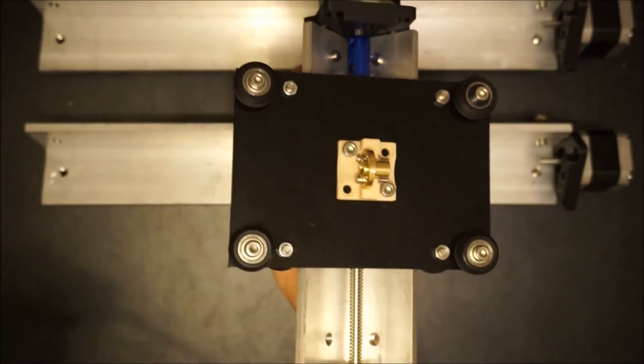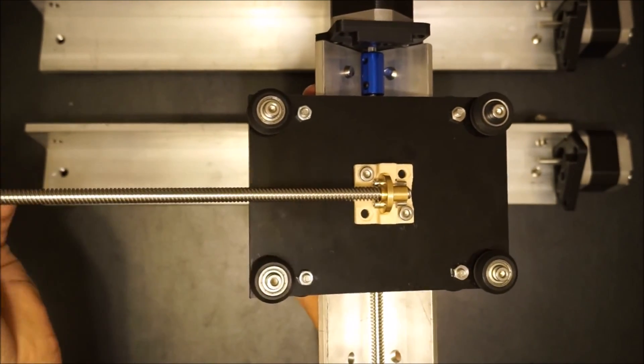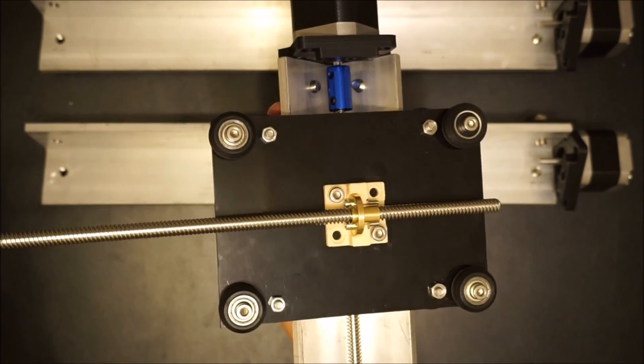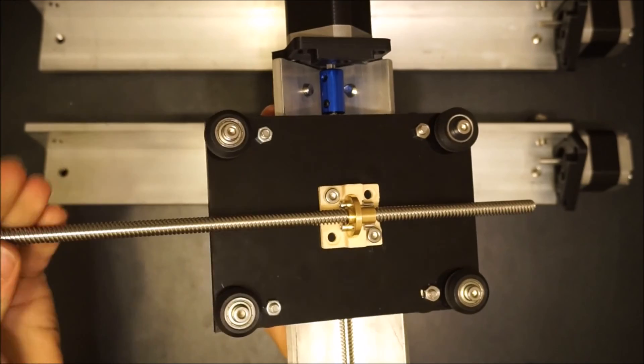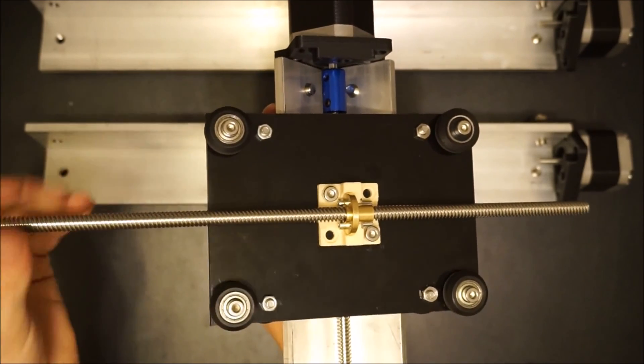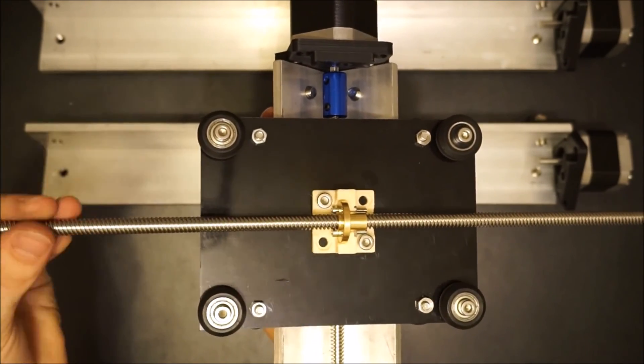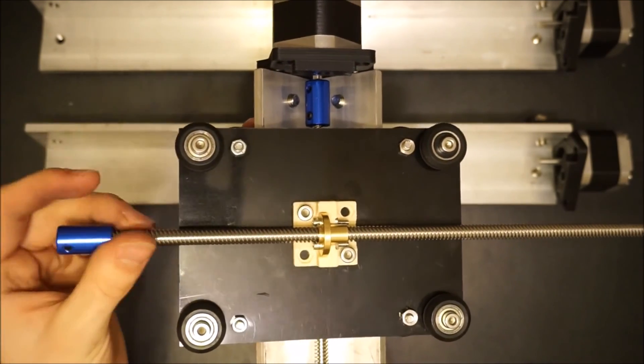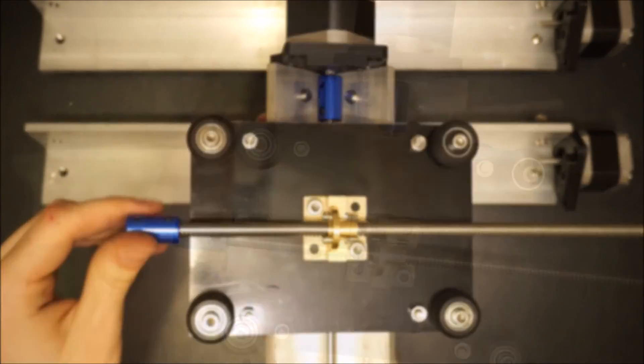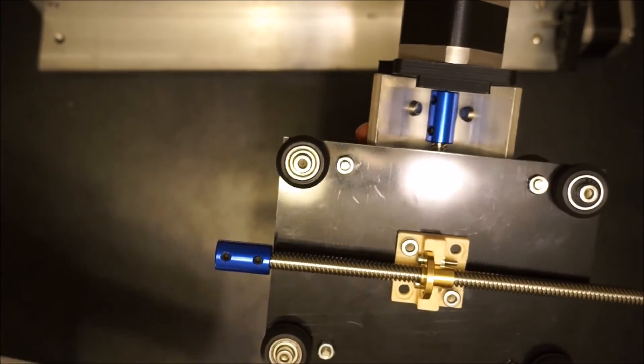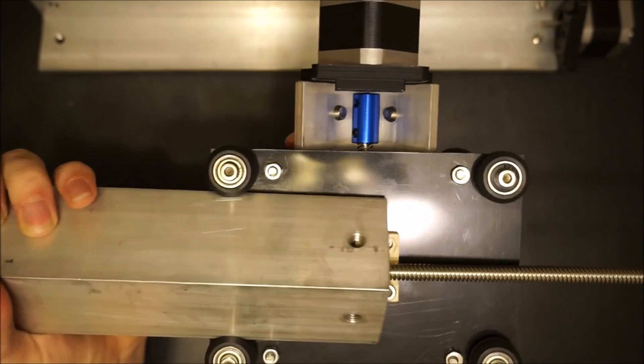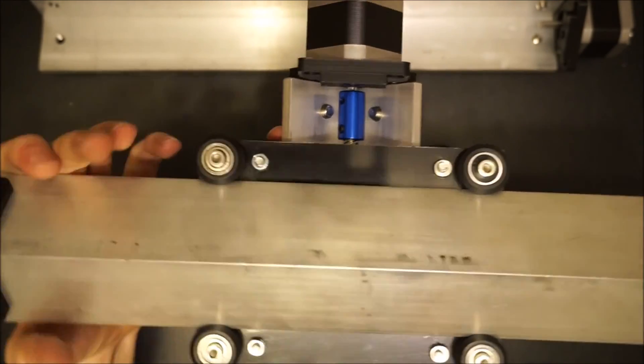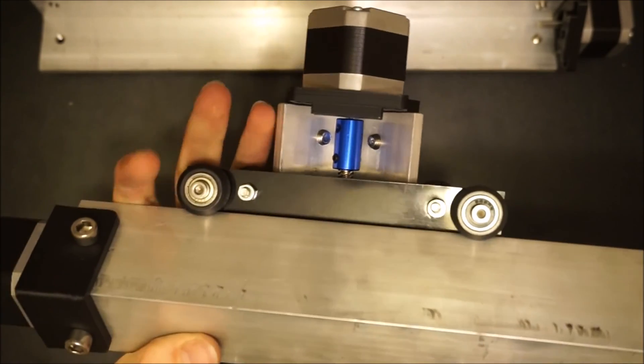These steps will be repeated on the other side of the XZ gantry as well as the Y gantry. A good way to check that your bearing compression is correct is that the gantry should be a little difficult to initially put on, but should slide smoothly once in place.